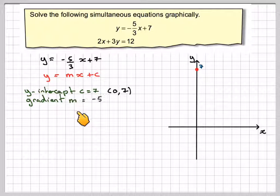The gradient is going to be m, which is minus 5 over 3. What does that mean? That means for every three squares I go along, I will go down 5. The next point will be there. So, go along 3 again, and then down 5 here.